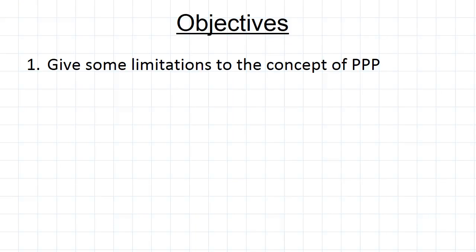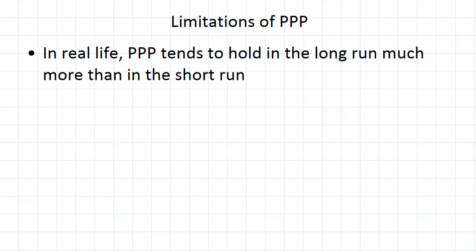We know how purchasing power parity works in theory. Now we're going to have a look at some limitations that get in the way in reality. It turns out that if you look at the real-world evidence, purchasing power parity holds somewhat in the long run but much less so in the short run.